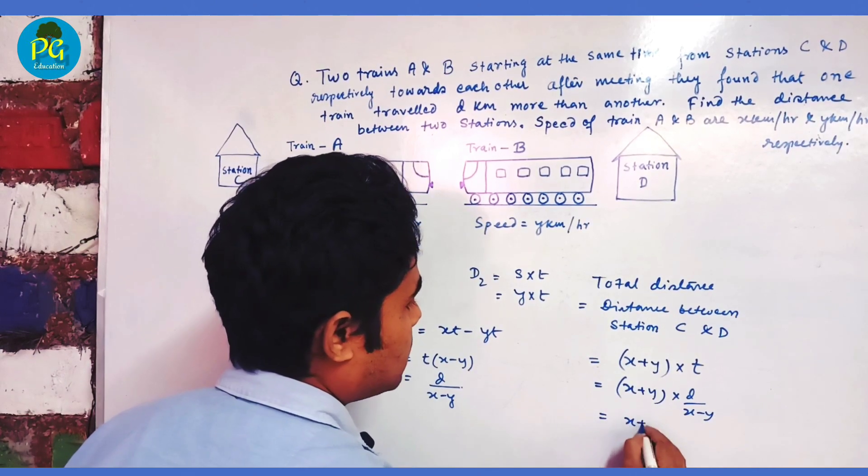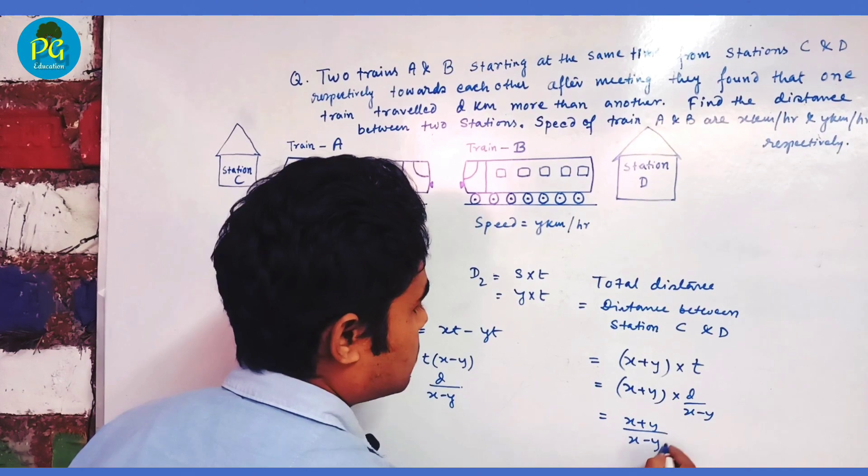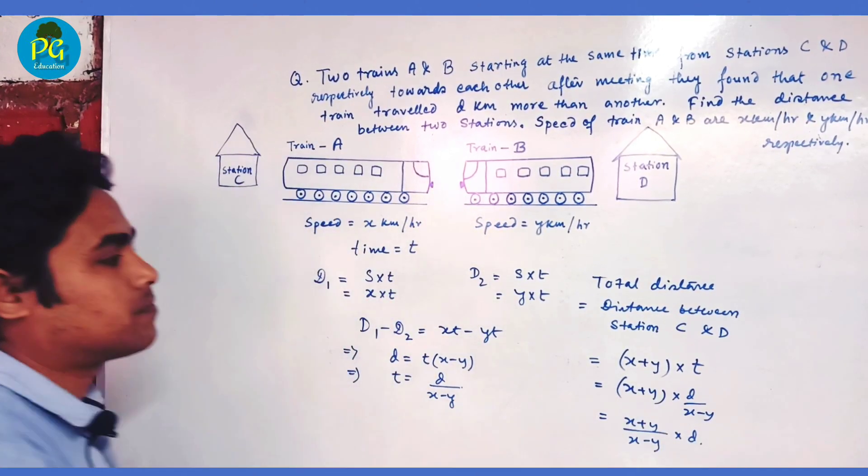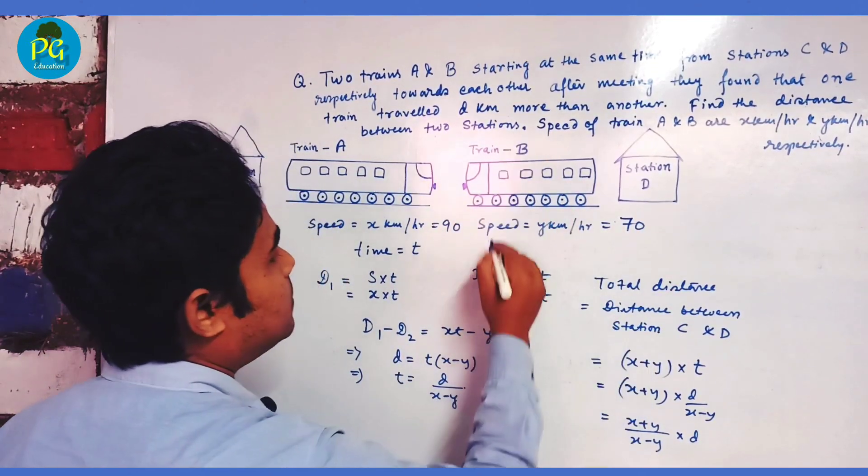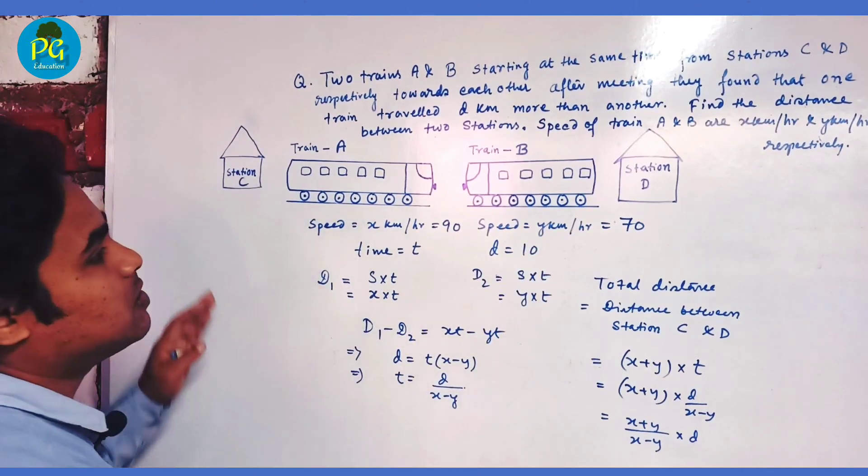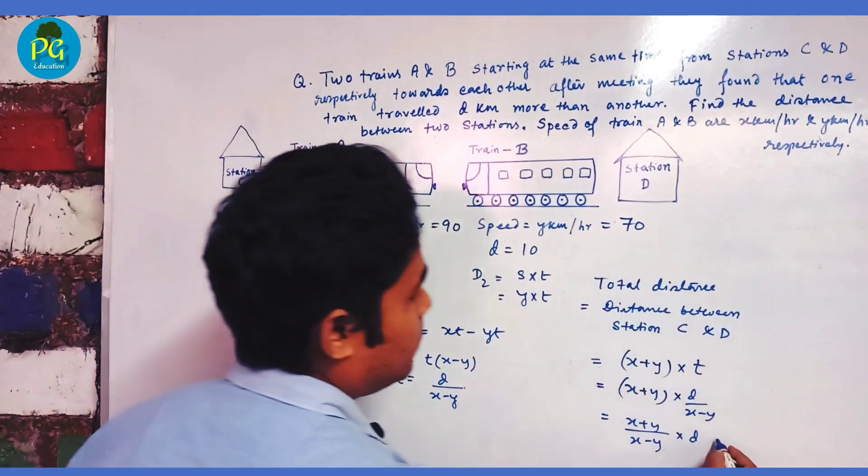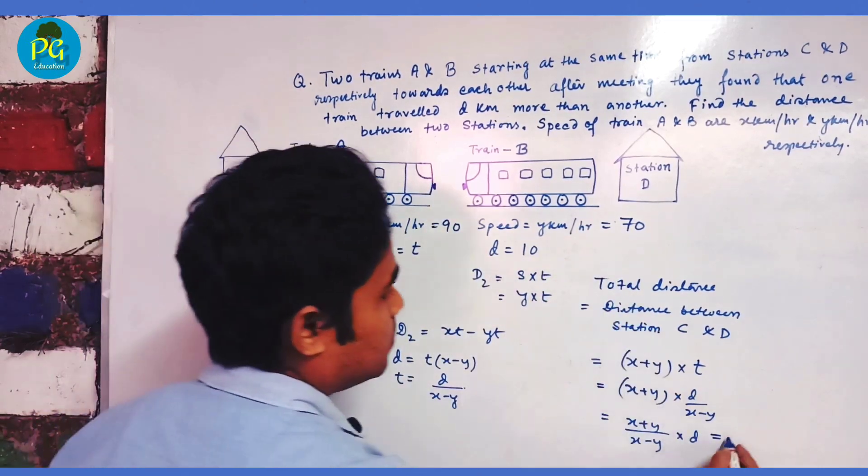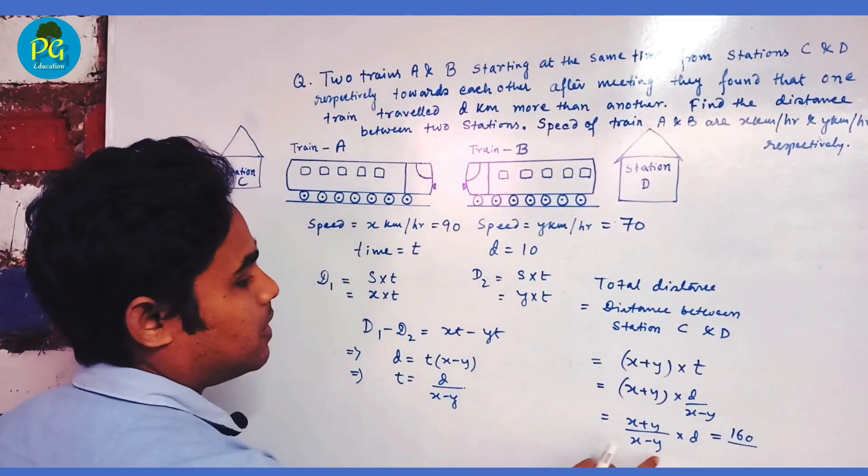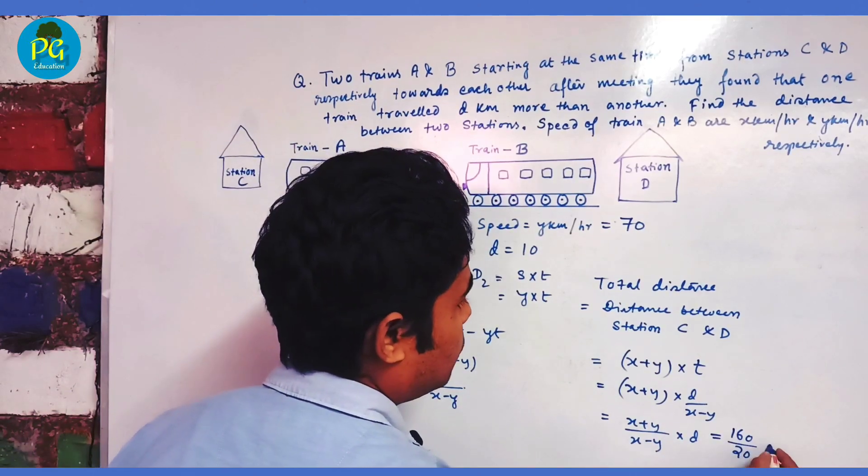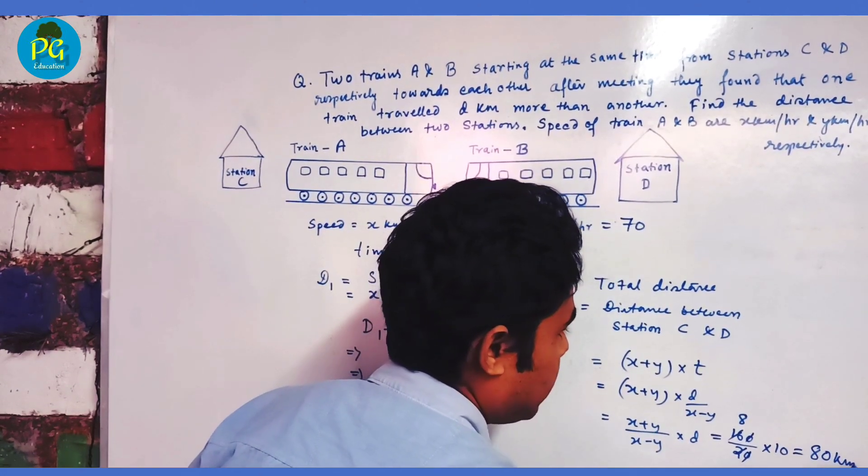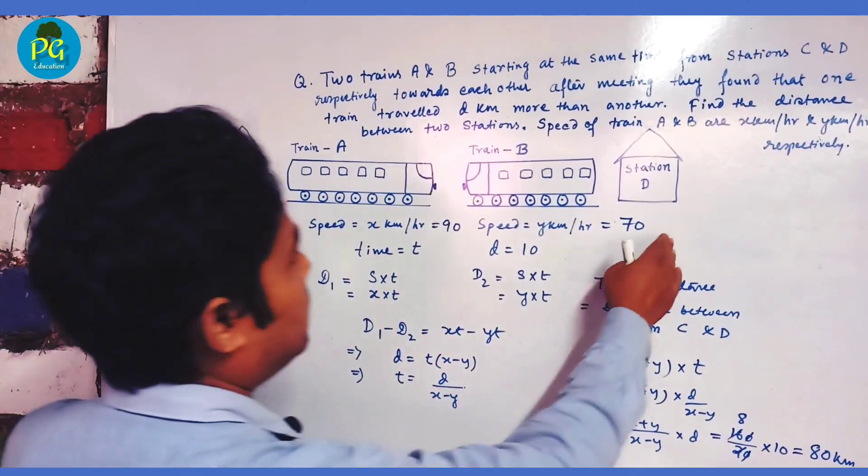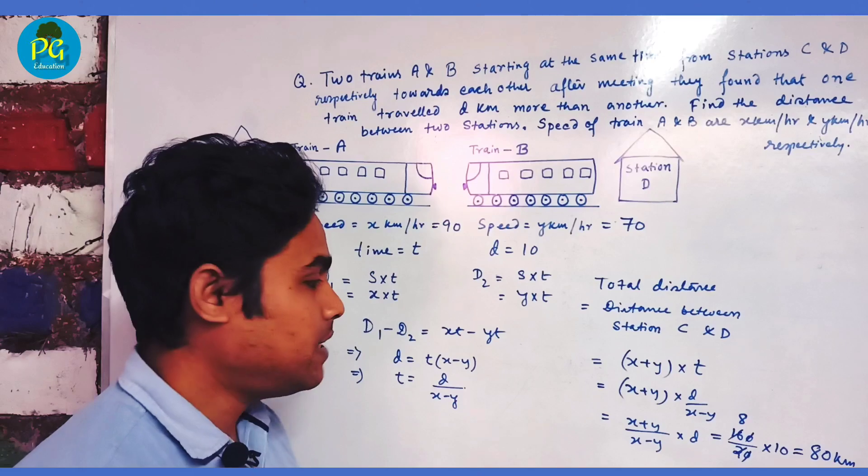Suppose the value of X is 90, Y is 70, and D is 10. Then the distance between stations C and D will be 90 plus 70 equals 160, and 90 minus 70 equals 20. So 160 divided by 20 times 10 equals 80 kilometers. So 80 kilometers is the required distance between stations C and D.